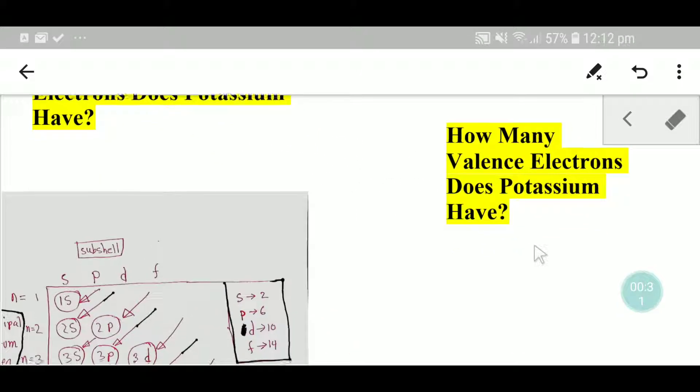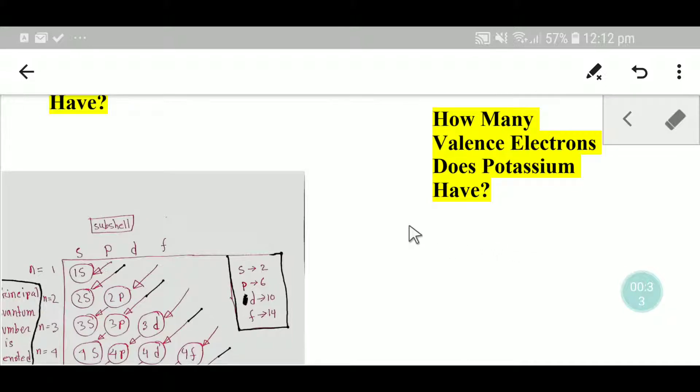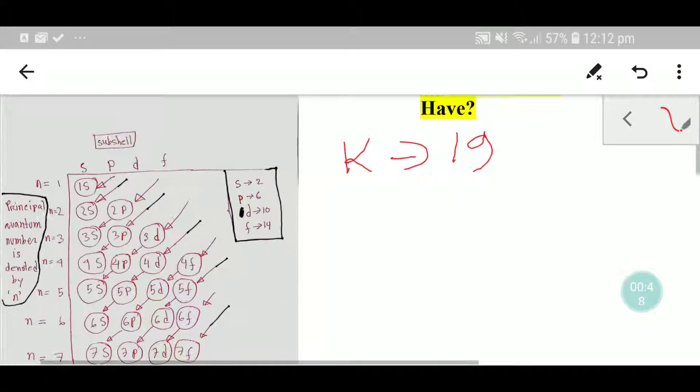In the first step, from the periodic table we know that the symbol for potassium is K, and its atomic number is 19.